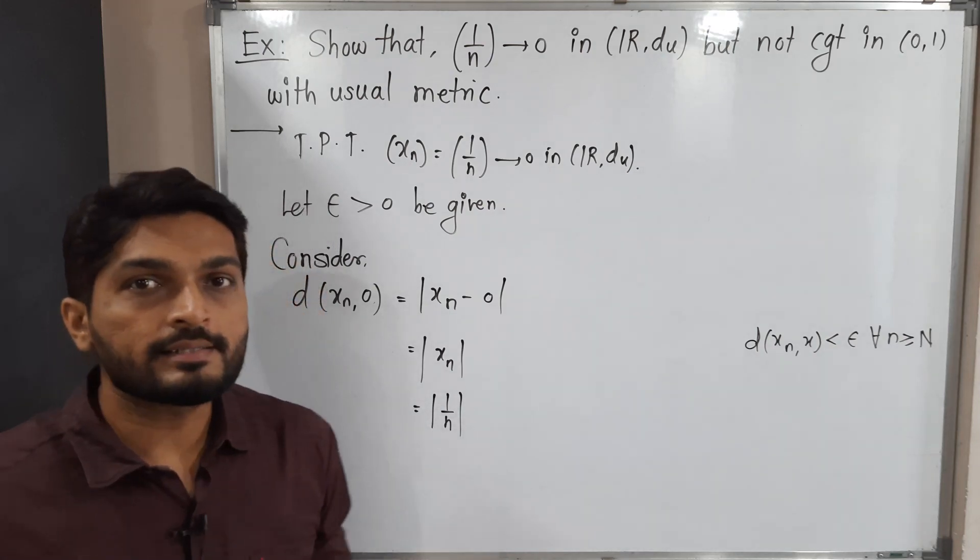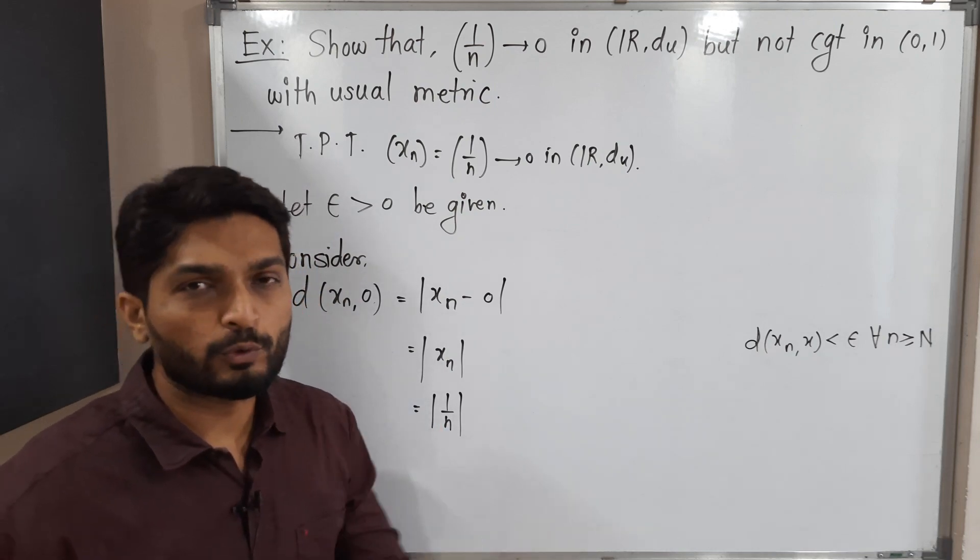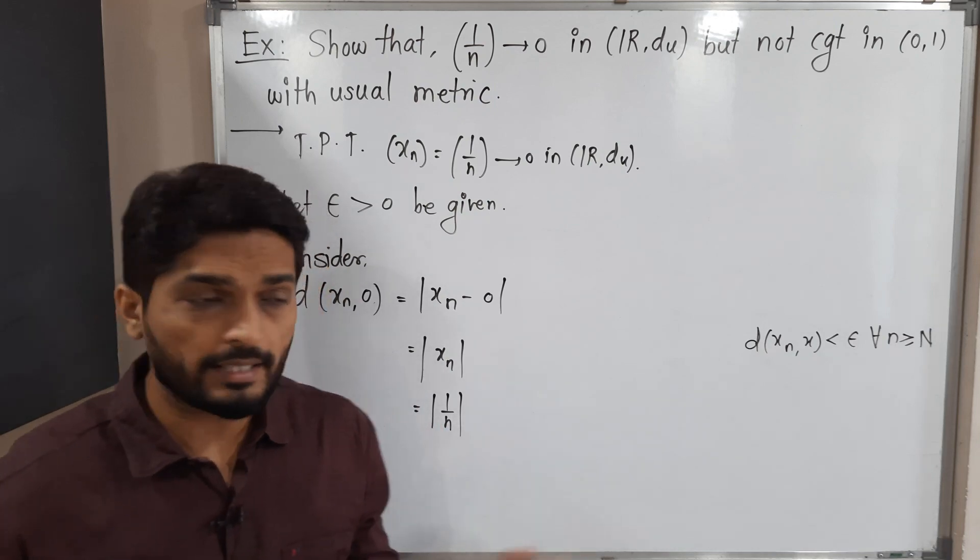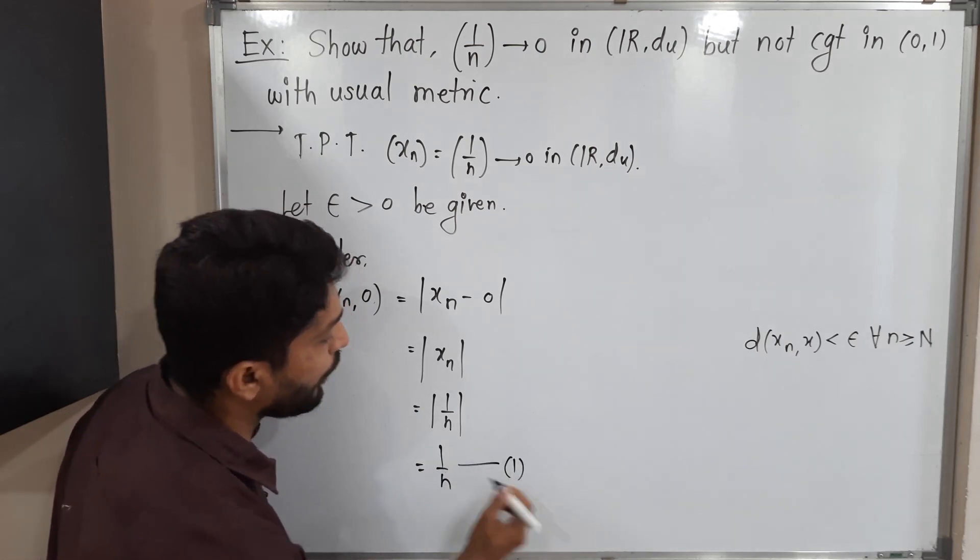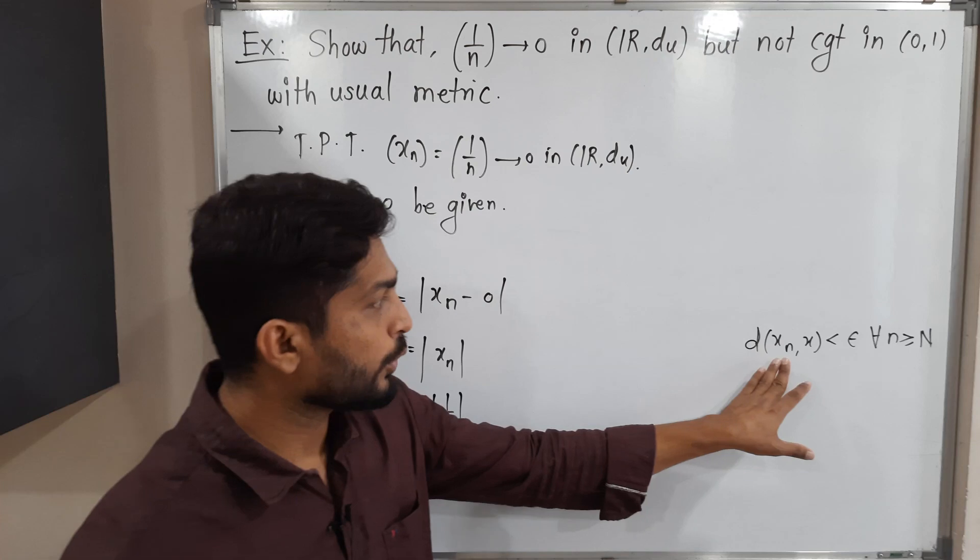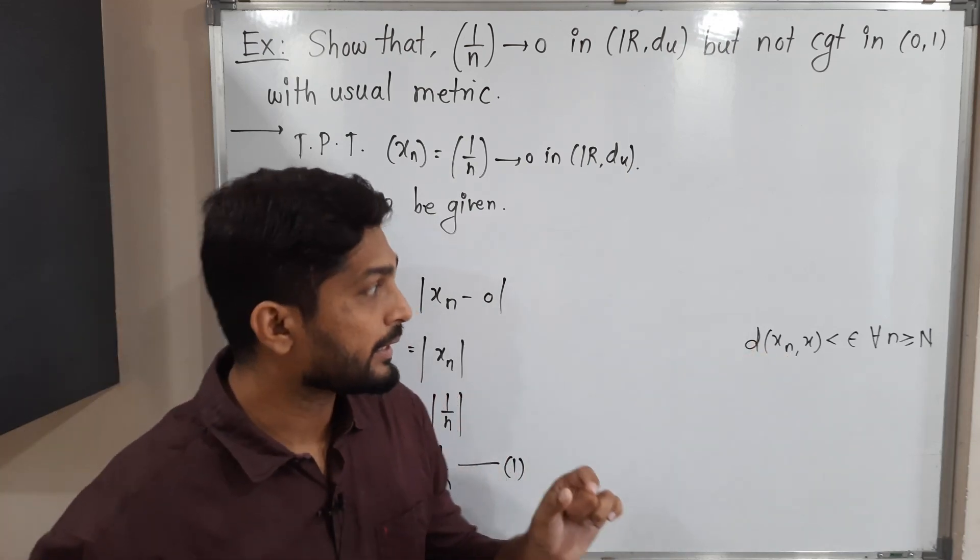See, 1 by n is a positive real number. Positive real number, because n is a natural number. That's why no need to apply mod. There is no any minus sign. And we will have same 1 by n. I will call it as equation 1. So we solved it and we found its value is 1 by n. So now we have to choose capital N.